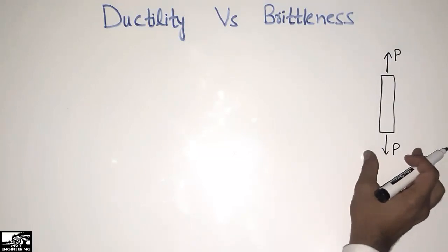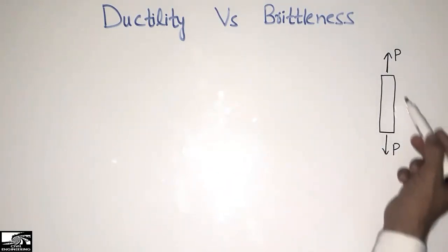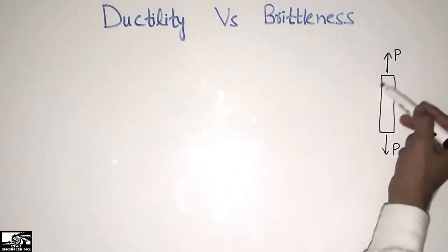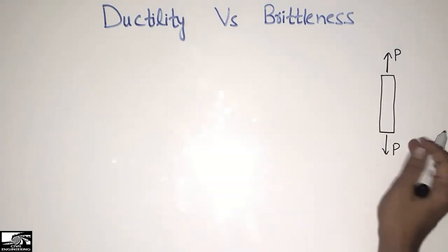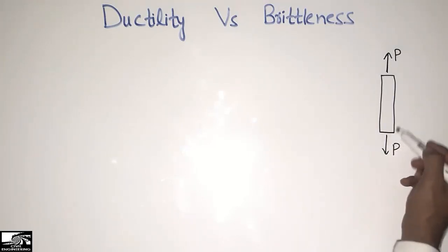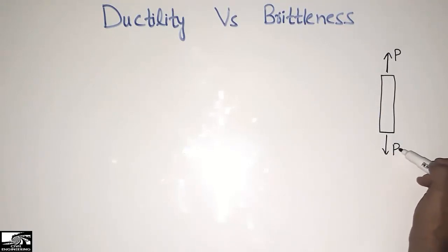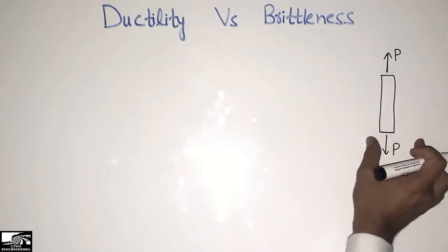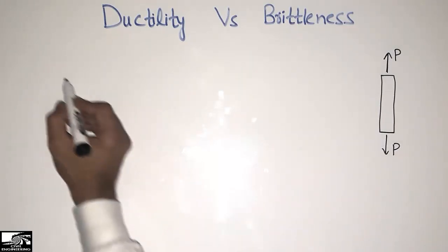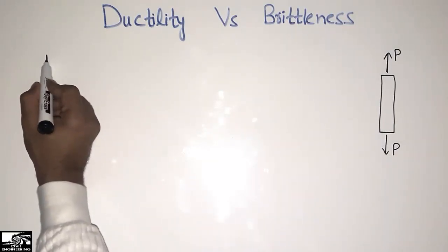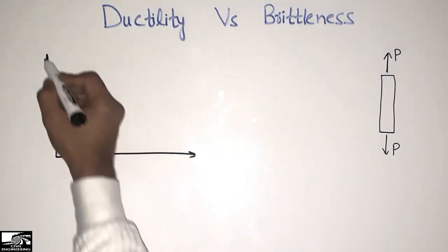I will explain these two material properties with the help of this diagram and with the help of the stress-strain graph. Let's consider this is any material — it may be steel or concrete or something — and I will apply a tensile load on this material. Let's consider this is the load P acting on this material to create tension.